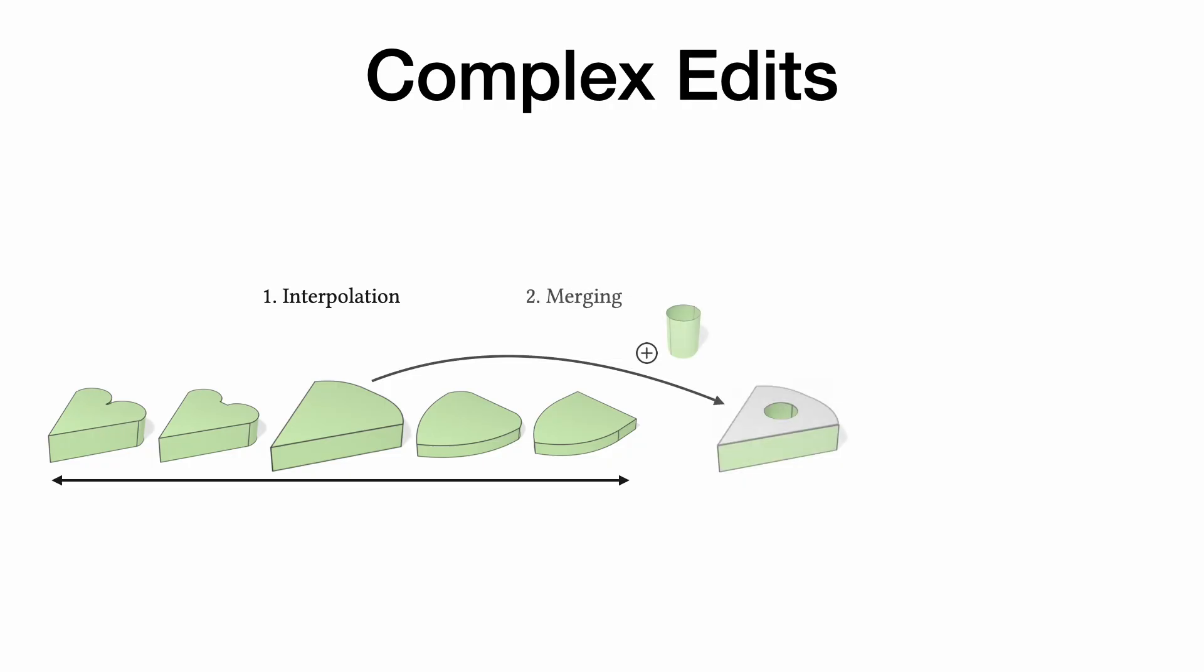Overall, BrepDiff enables complex editing sessions. For example, we can start by interpolating between two objects. We can then merge the result with a partial shape and further edit it, while ultimately recovering a valid shape with auto-completion.